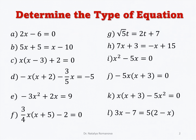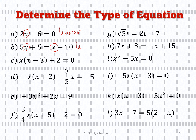Now it's practice time — we will find the type of every equation. The first equation, 2x minus 6, has variable x with power equal to 1, so it is a classic example of a linear equation. The second equation, 5x plus 5 equals x minus 10, also has variable x with power equal to 1, so it is a linear equation.